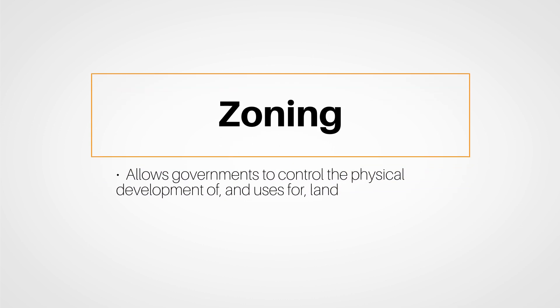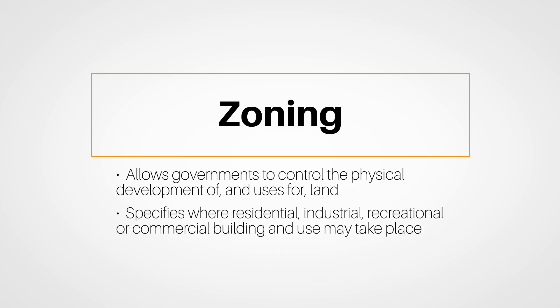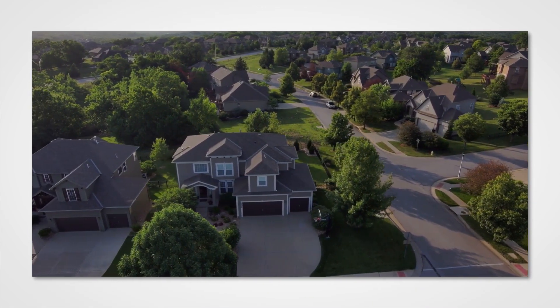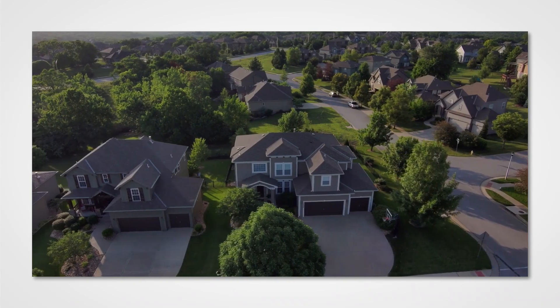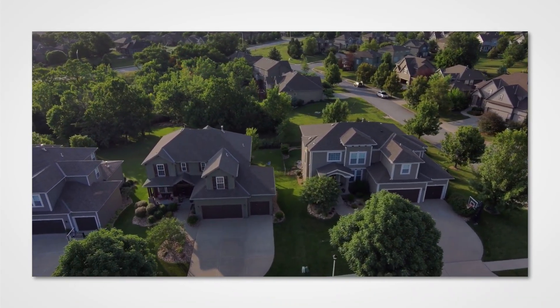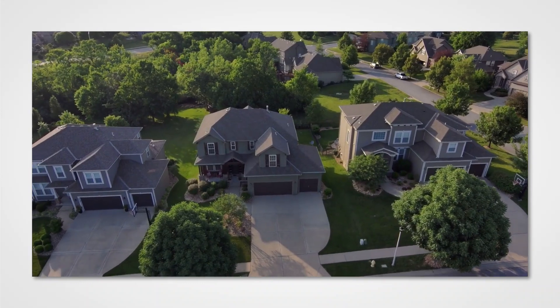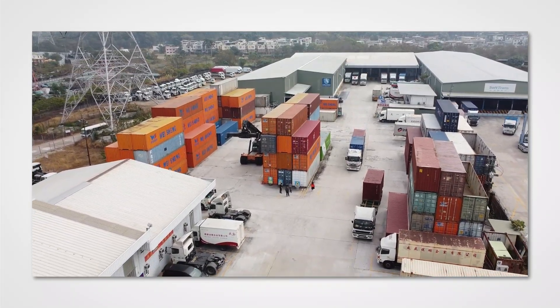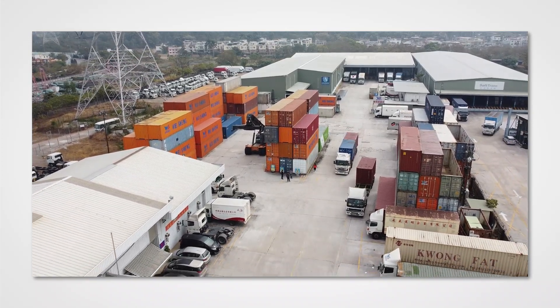Zoning allows governments to control the physical development of and uses for land. It also specifies where residential, industrial, recreational, or commercial building and use may take place. For example, an area zoned as residential might only allow single-family homes as opposed to duplexes or apartment complexes. On the other hand, a commercial zone might only allow certain commercial or industrial uses within its boundaries.